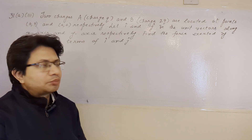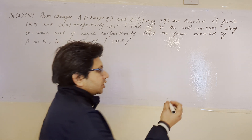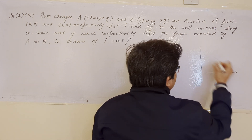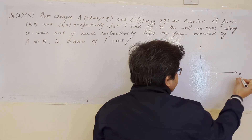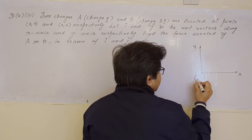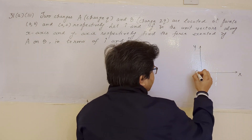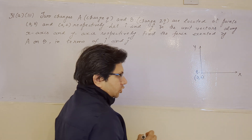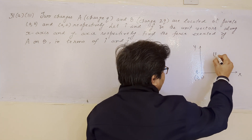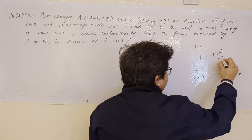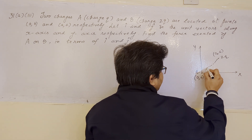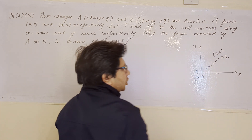The situation is shown on the x-y coordinate plane. The x-axis and y-axis are drawn. The first charge, of magnitude q, is placed at (0,0), and the second charge, of magnitude 2q, is placed at the coordinate (a, a). We have to find out the force on this second charge 2q.